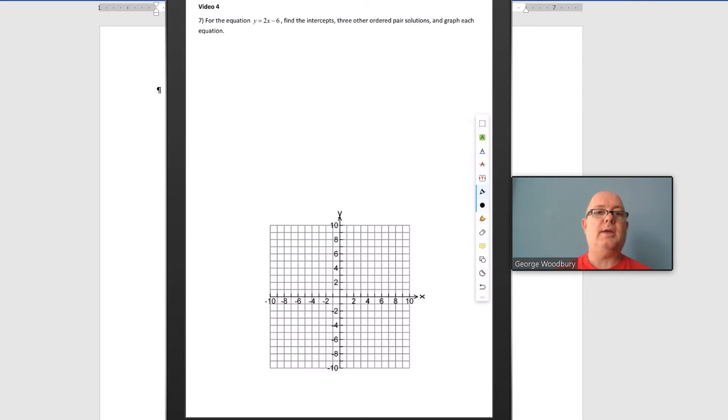So the first one, y equals 2x minus 6, this is a linear equation. The graph of this equation should be a straight line. We're going to build a table of points down here, and we're going to end up with maybe five ordered pairs. We're going to find the intercepts plus three other ordered pair solutions.